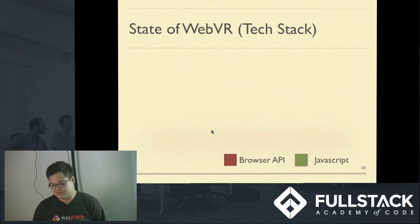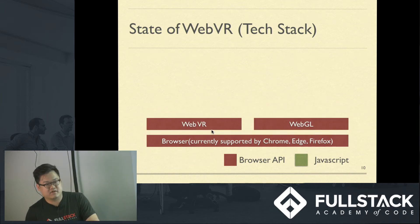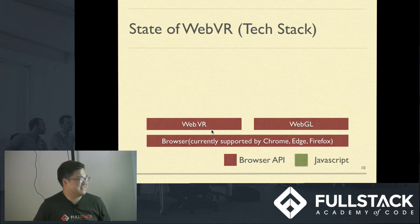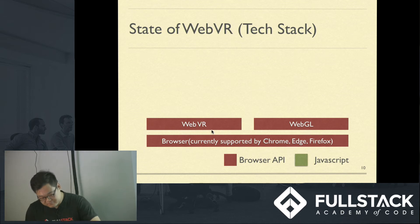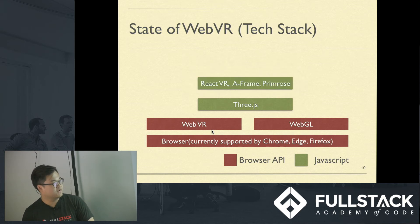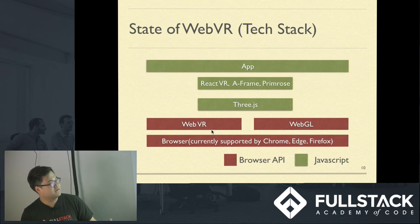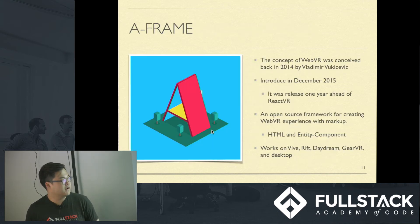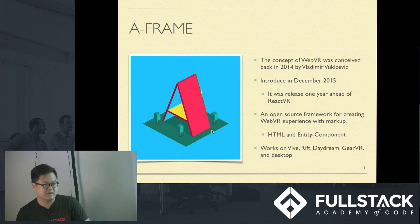The current stack of WebVR looks like this. You have browsers currently supported by Chrome, Edge, and Firefox — and Safari too. Firefox actually just released their WebVR-supporting update today. The browser API layer includes WebGL, which makes 2D and 3D rendering work, and WebVR, which is a standard that makes VR function on the web. Three.js is used for component rendering and is the foundation of 3D math for libraries like A-Frame and React VR. I recommend A-Frame — it seems a lot easier based on the forums I've read.